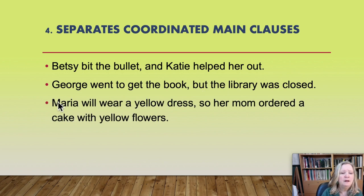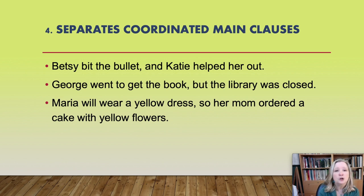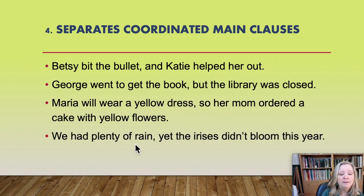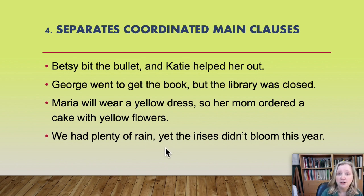More examples of coordinated main clauses: "Maria will wear a yellow dress, so her mom ordered a cake with yellow flowers." Maria/will wear and mom/ordered — subject and verb in both clauses, so a comma before the conjunction. And: "We had plenty of rain, yet the irises didn't bloom this year." We/had and irises/didn't bloom — subject, verb, subject, verb — with the conjunction "yet" preceded by a comma.